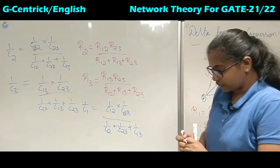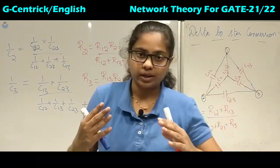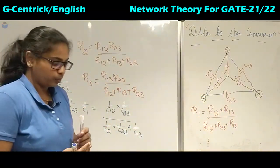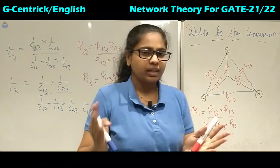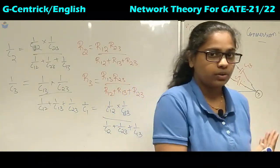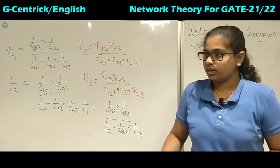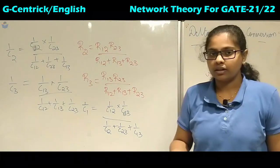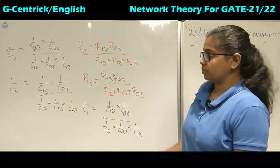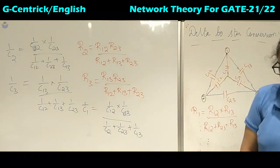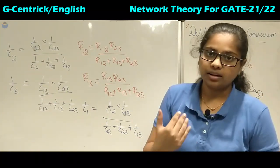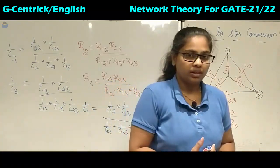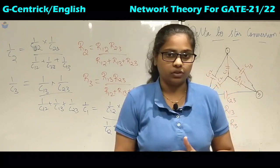In the next lecture we will see some conclusions for when all elements have the same value — in that case we can directly convert star to delta and delta to star without using these formulas. If different values are given, we use this method. We will also work through one or two problems on delta to star conversion. Thank you.